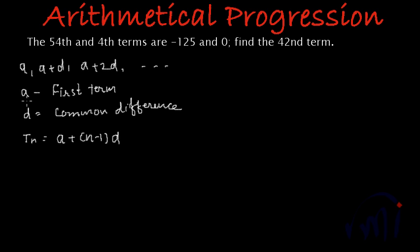So if we can find a and d, that is the first term and the common difference, we can find any term which belongs to that progression. So to find a and d, we are actually provided with 54th and 4th term.